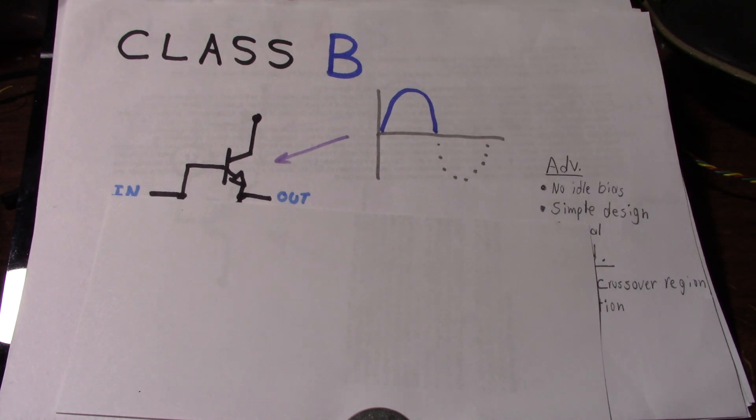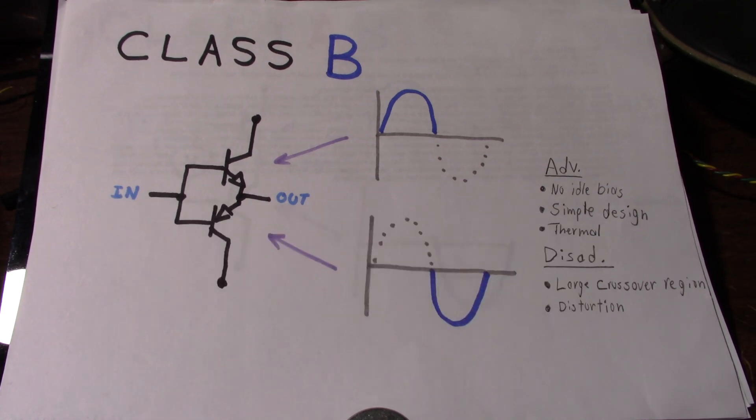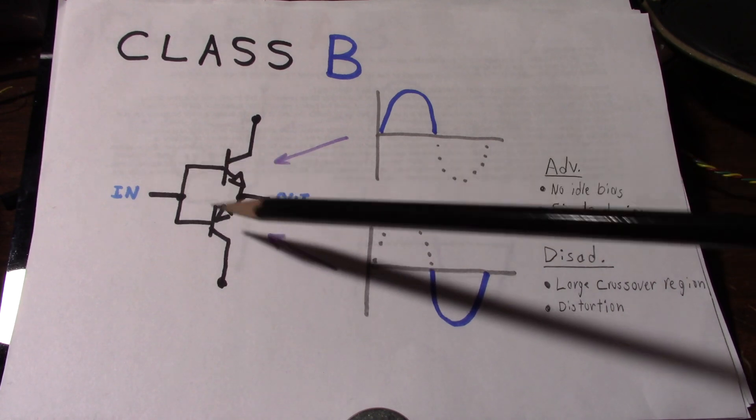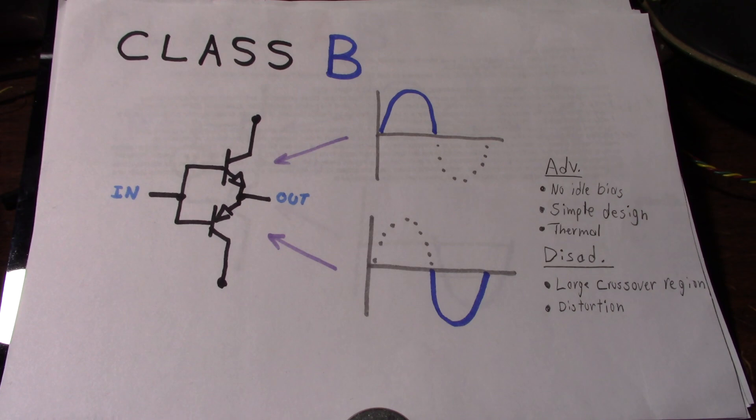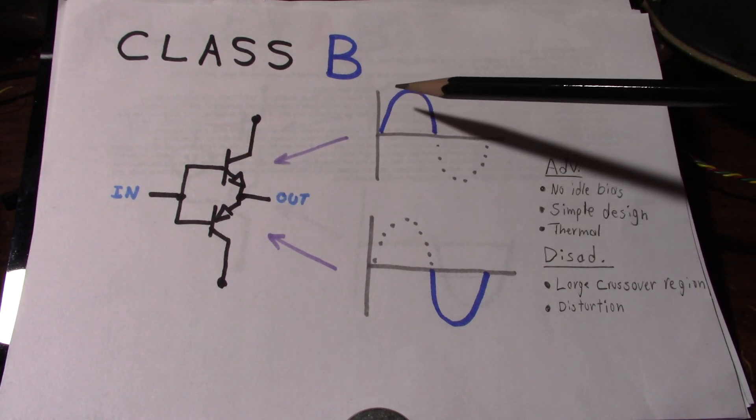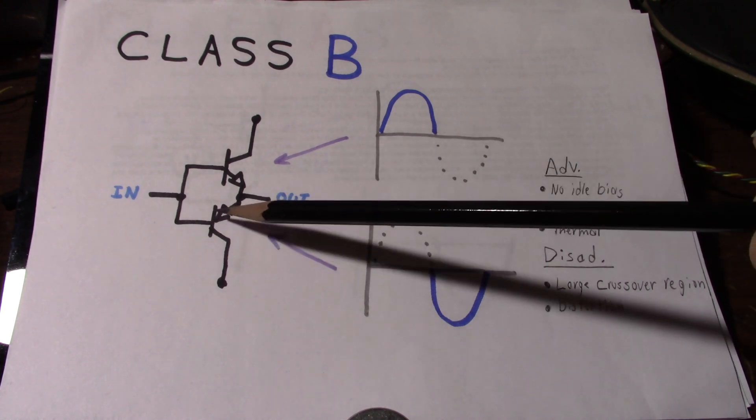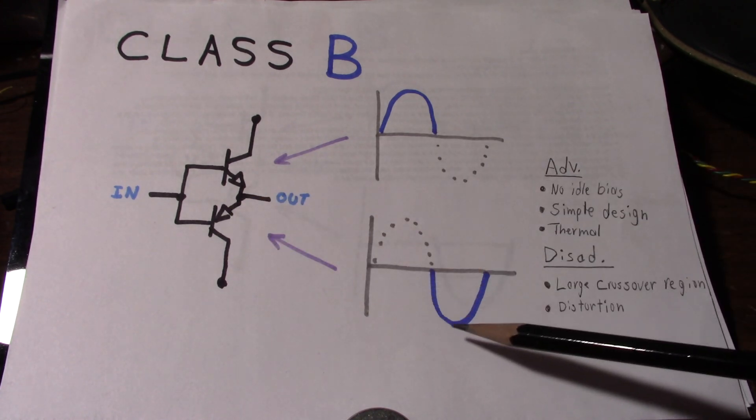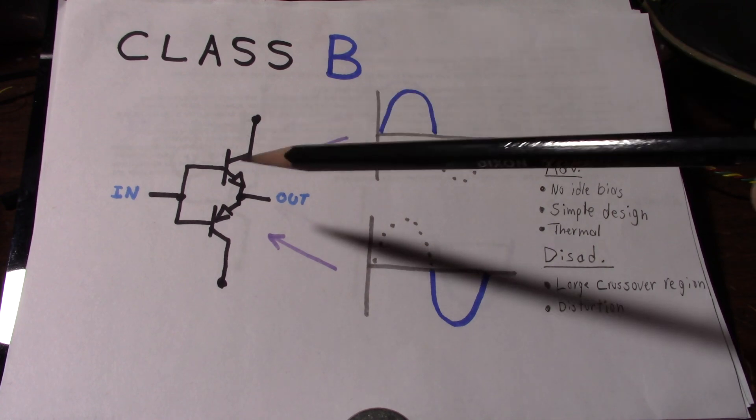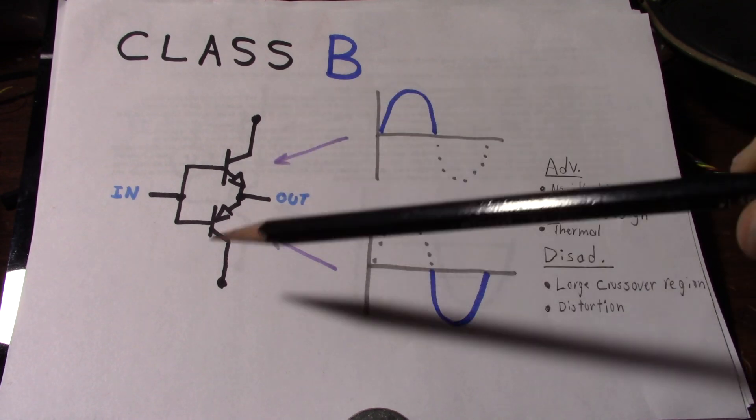So we have to make a little change to the circuit here. So what we do is we add a second transistor that will handle the other part of the waveform. So the top transistor is handling the top half of the waveform, and the bottom transistor is handling the bottom part of the waveform, or the negative part. And this can apply to other devices like MOSFETs or vacuum tubes.